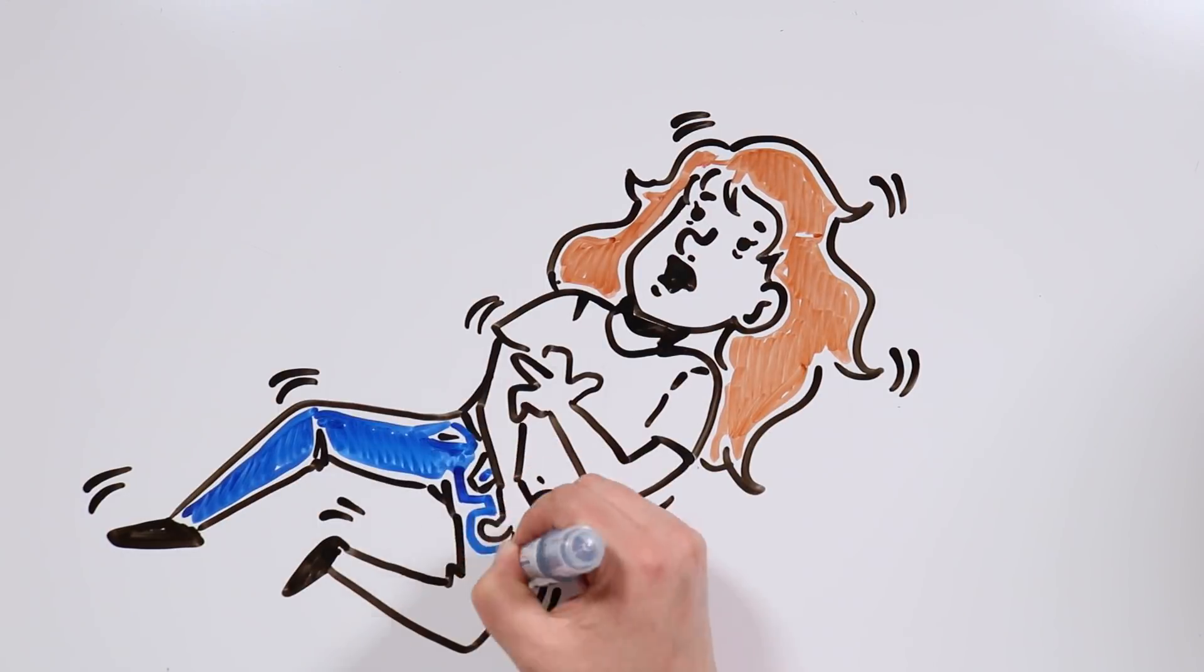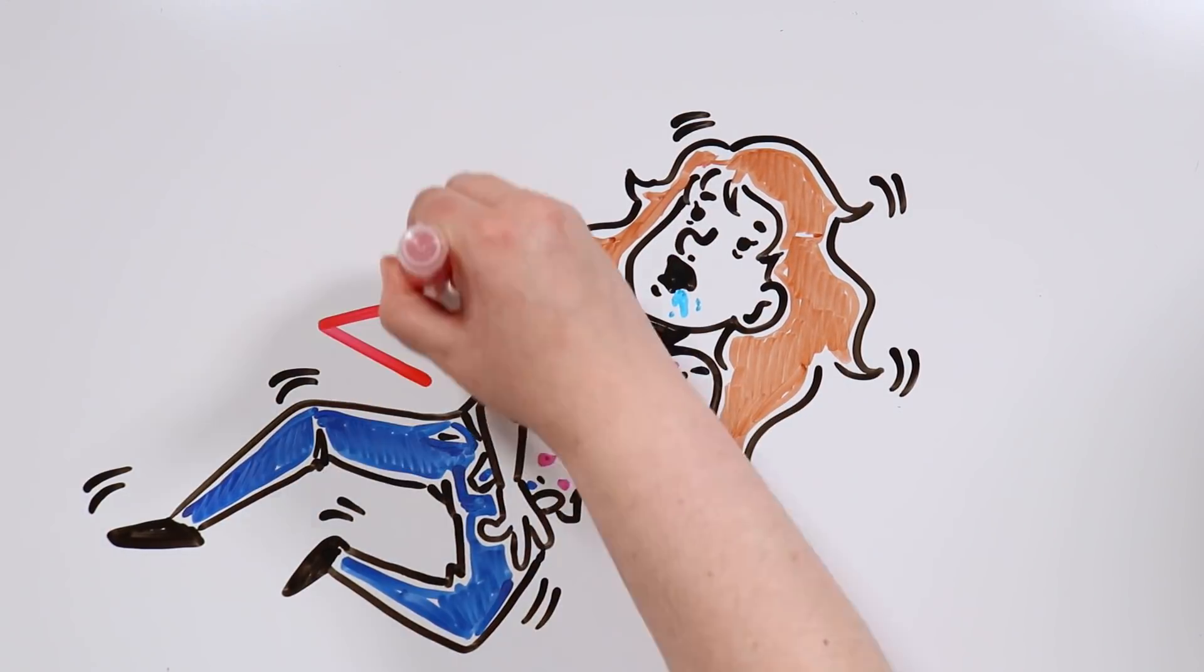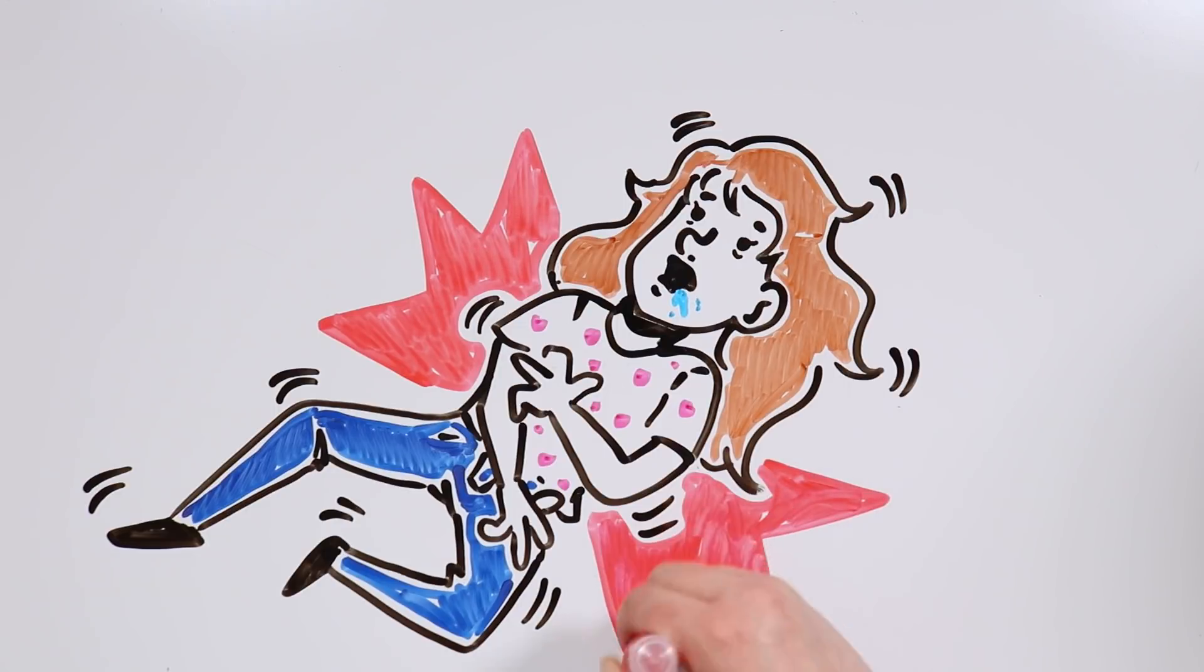When someone who has epilepsy experiences convulsions and erratic movements, we say that the person is suffering an epileptic attack.